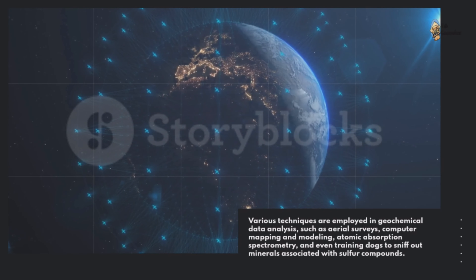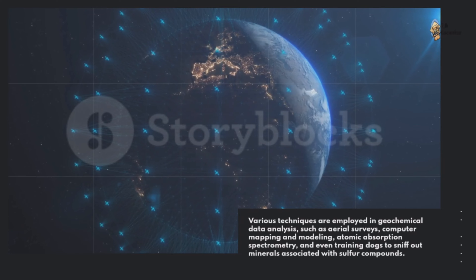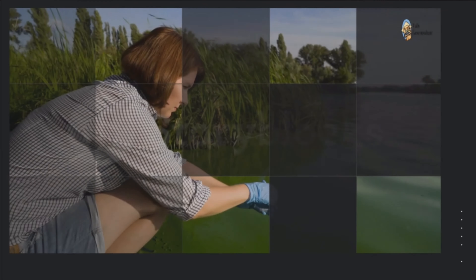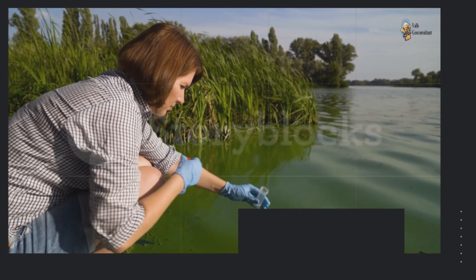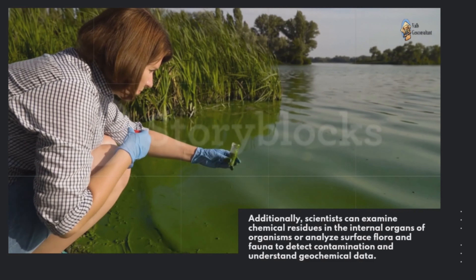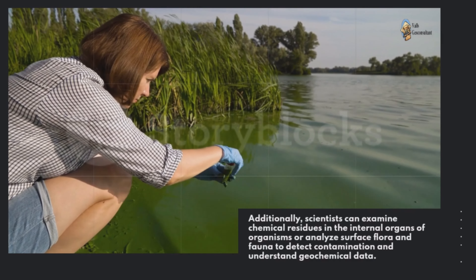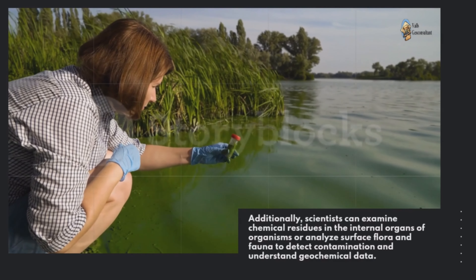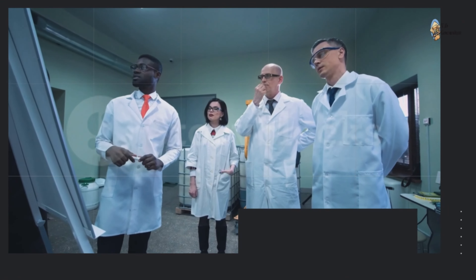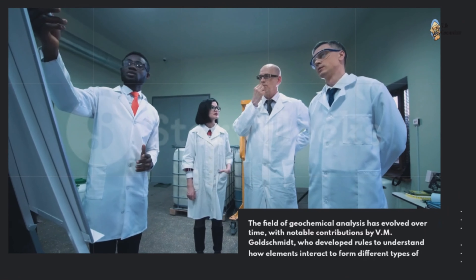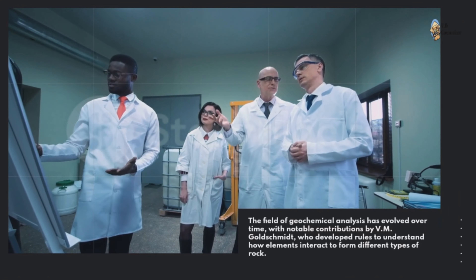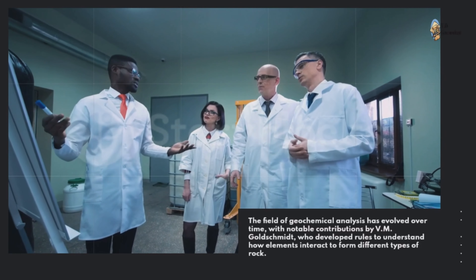Various techniques are employed in geochemical data analysis, such as aerial surveys, computer mapping and modeling, atomic absorption spectrometry, and even training dogs to sniff out minerals associated with sulfur compounds. Additionally, scientists can examine chemical residues in the internal organs of organisms or analyze surface flora and fauna to detect contamination and understand geochemical data.